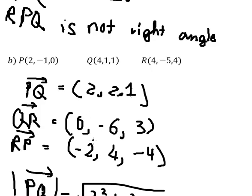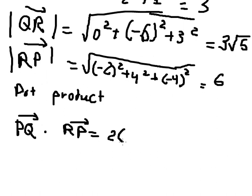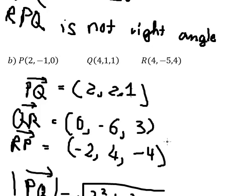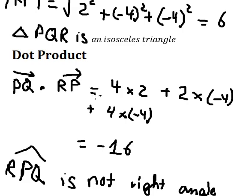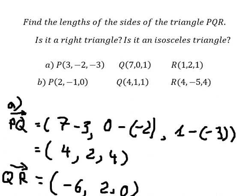Using the dot product with these vectors: two times negative two, plus two times four, plus one times negative four. We calculate this and get zero. Since the dot product equals zero, triangle BQR for question B is a right-angle triangle.